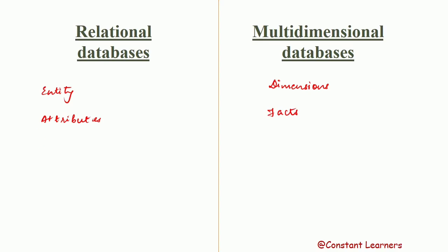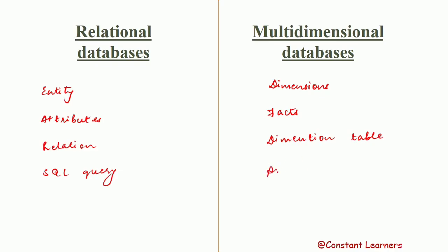In relational databases, the table is known as a relation. In multidimensional databases, the table of dimensions and facts is known as the dimension table. SQL queries are used to query relational databases, while analytical questions by users are used to query multidimensional databases. These analytical questions reference the multidimensional database, understand the trends and patterns, and then respond to the users.